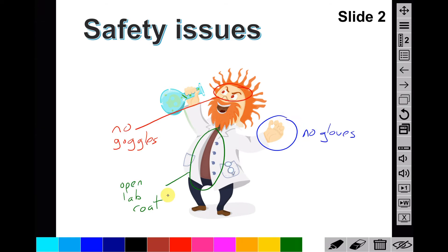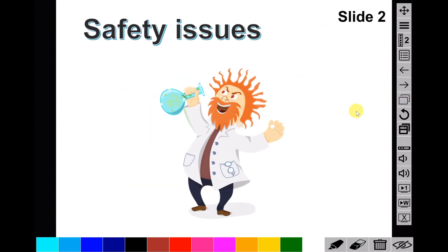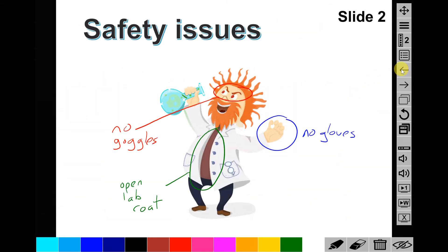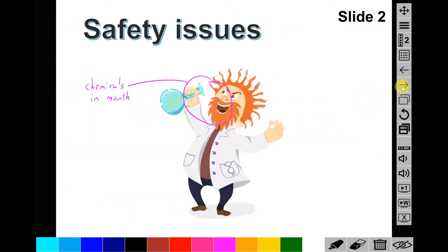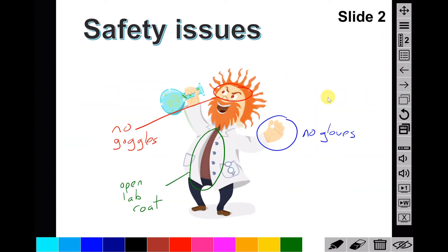And then if you were to find that you needed more space to annotate the same slide, you could use the new button that creates a copy of the current slide, which will give you more space to annotate on the same slide. As you can see, this slide was created as a copy of the previous one, and it gives you more space to annotate during a slideshow.